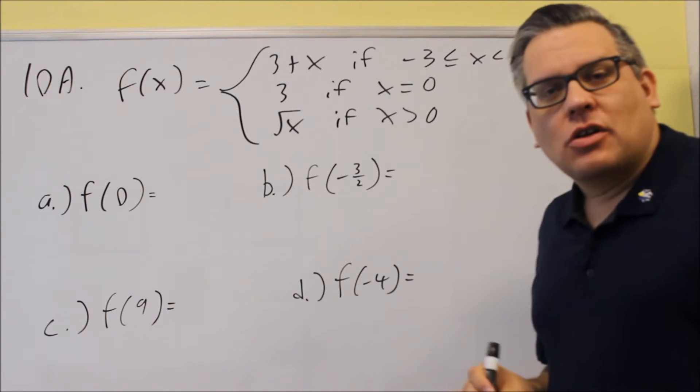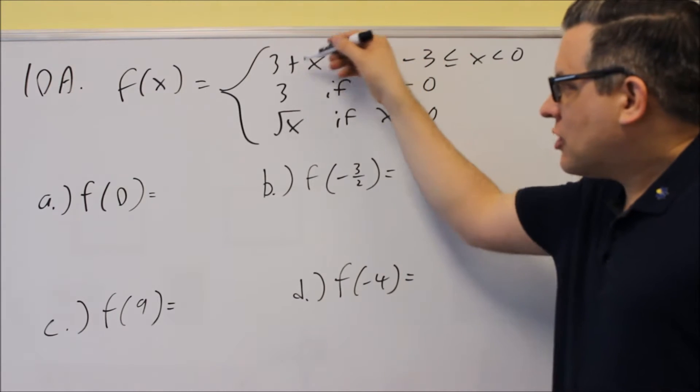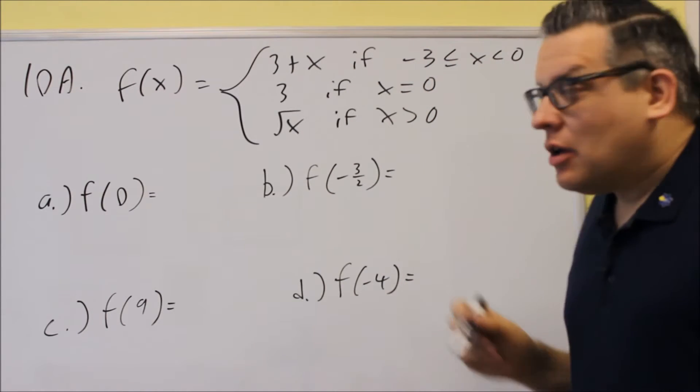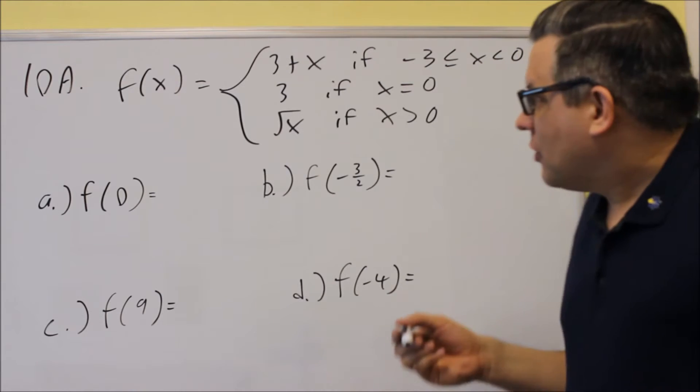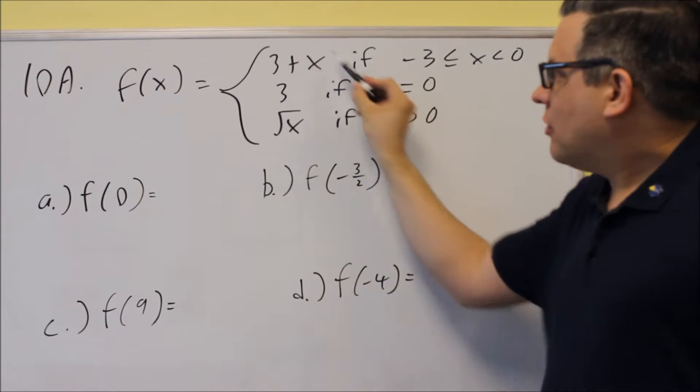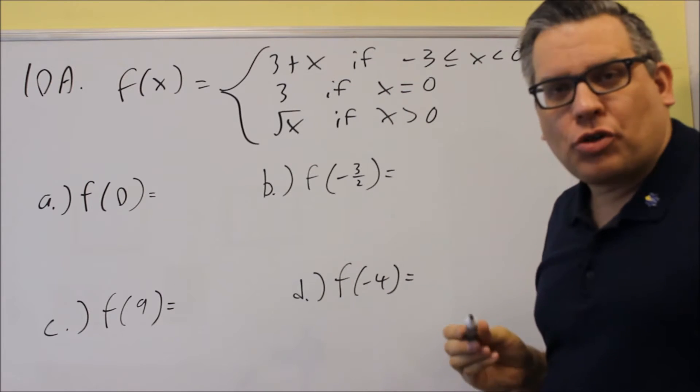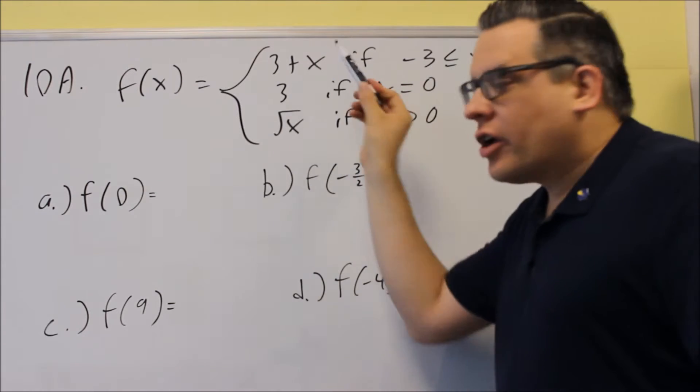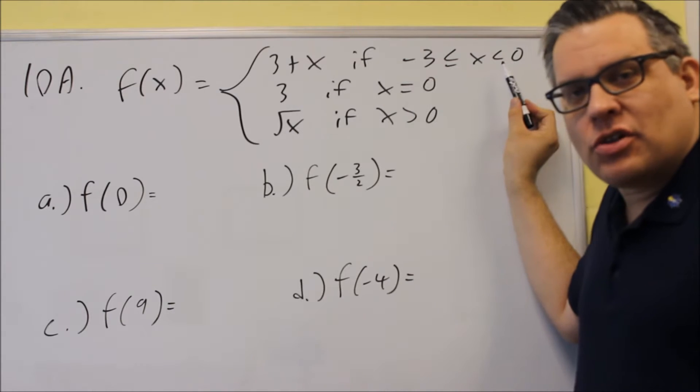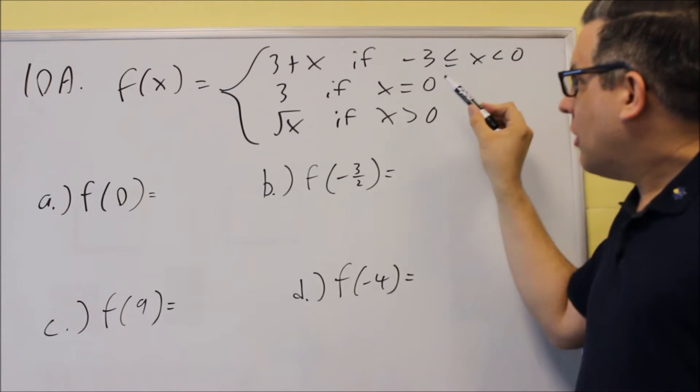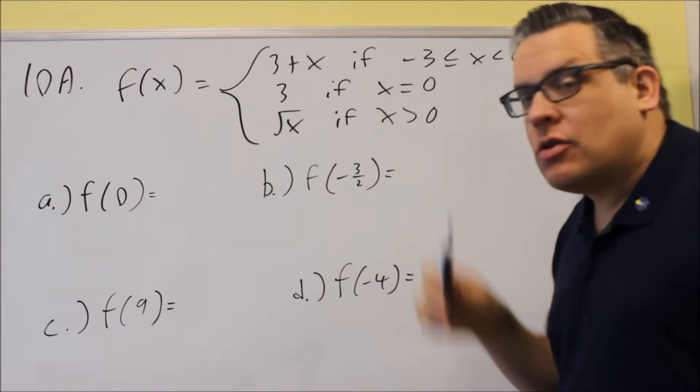Now piecewise, basically it's a function that's made up of different pieces, but each of these pieces have a condition statement on it. So that means that, for instance, this first equation, 3 plus x, we're only going to use that if we're plugging in values between negative 3 and 0. So if we don't have numbers between negative 3 and 0, we're not going to use that first one.